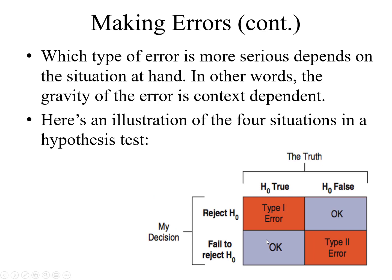Now, which type of error is more serious? Both types of errors are serious, but which one is the most serious depends on the situation at hand. It depends on the experiment you want to conduct. In other words, the gravity of the error is context dependent — it depends on the environment and the analysis.